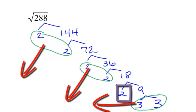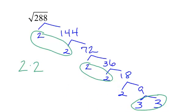So, that 2 will come out. And this 2. And then this 3. Then this radical 2 here would be left underneath the radical. Outside the radical, I have 2 times 2 times 3, which will be 12, radical 2.